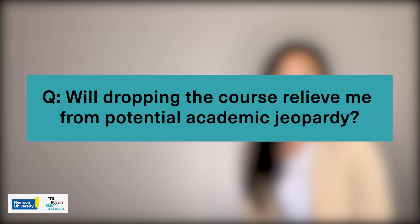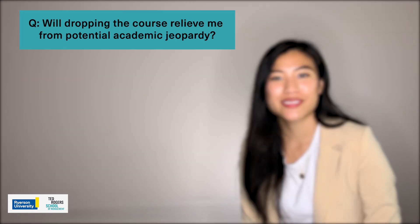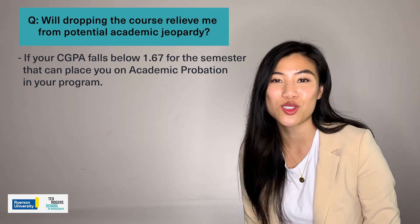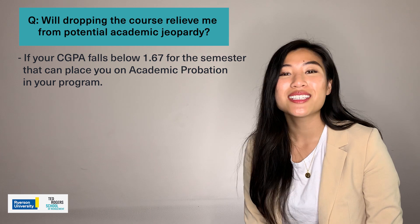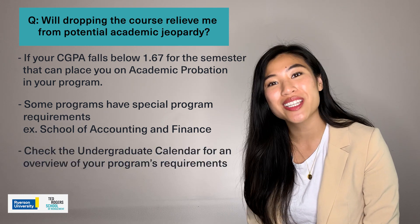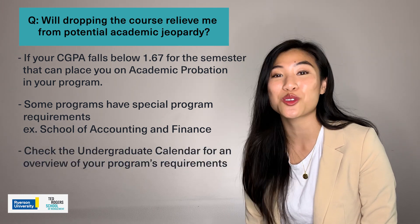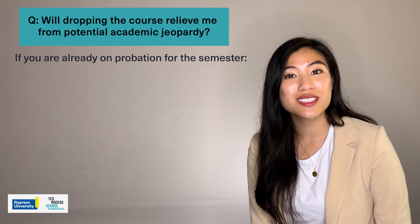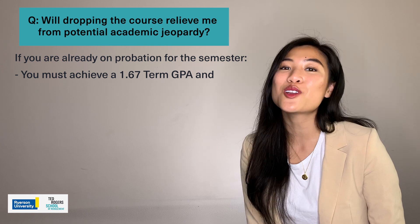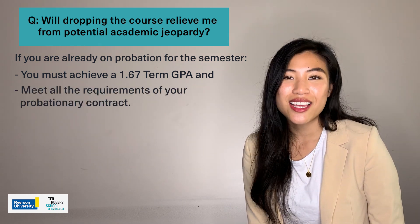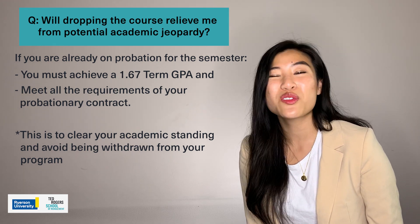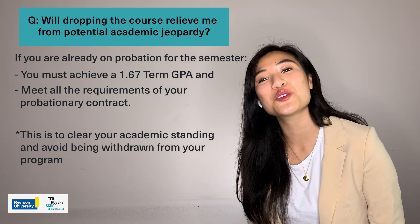Will dropping the course relieve me from potential academic jeopardy? If your CGPA falls below 1.67 for the semester, that can place you on academic probation for your program. Some programs have special requirements, like the School of Accounting and Finance, so it's important to check the undergraduate calendar for your program to see those requirements. If you're already on probation for the semester, you need to achieve a 1.67 term GPA and meet all the requirements on your probationary contract. This is to clear your academic standing and avoid being withdrawn from your program. If you have questions about your probationary contract, speak with your student advisor.